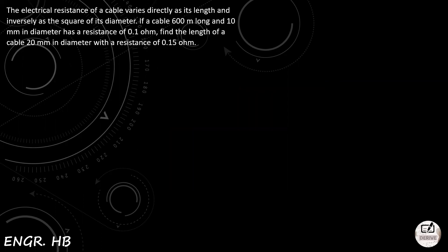So first question: the electrical resistance of a cable varies directly as its length and inversely as the square of its diameter. If a cable 600 meters long and 10 mm in diameter has a resistance of 0.1 ohm, find the length of a cable 20 millimeters in diameter with a resistance of 0.15 ohms.